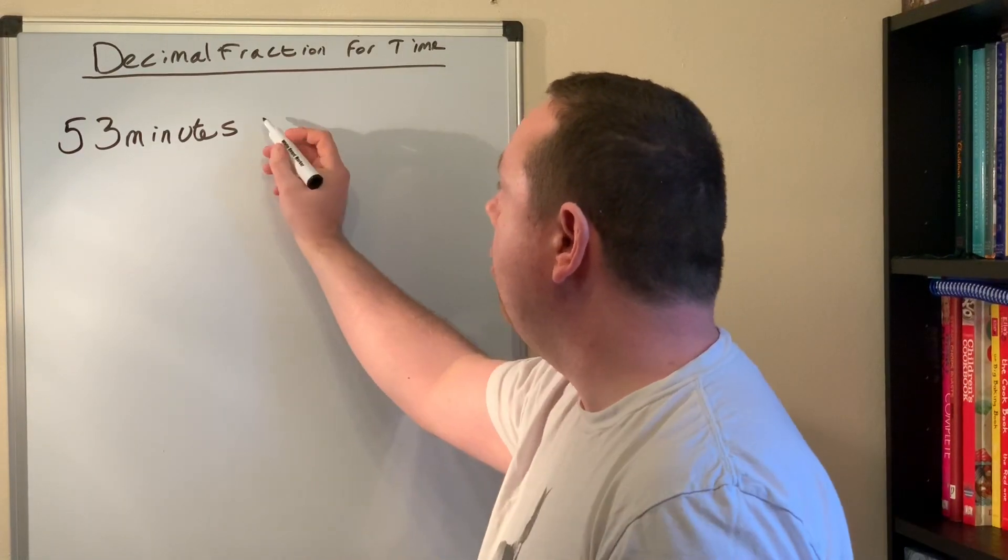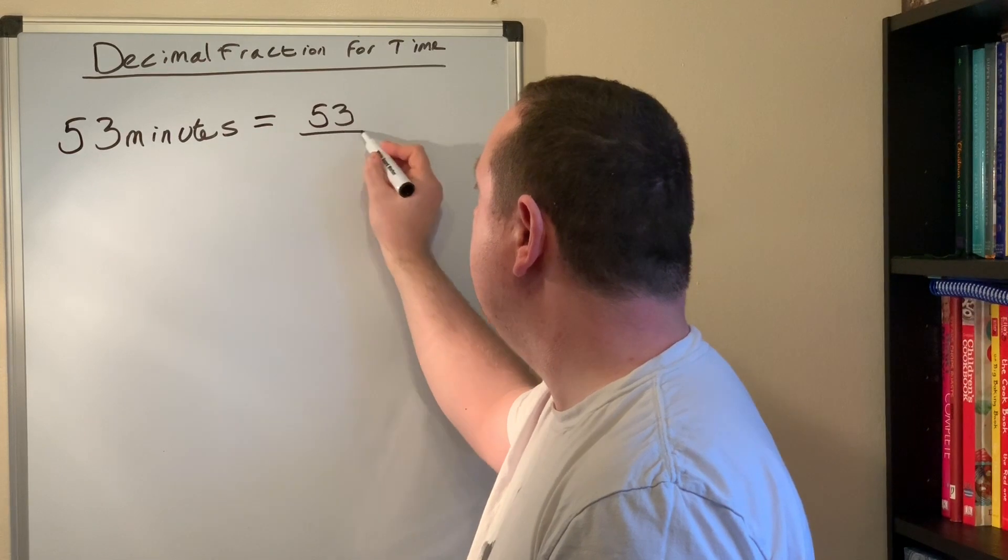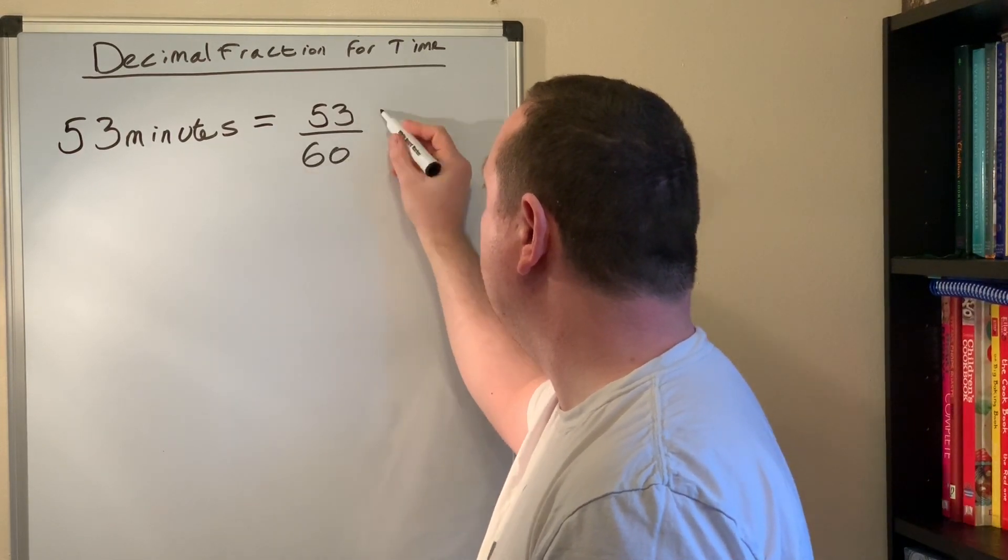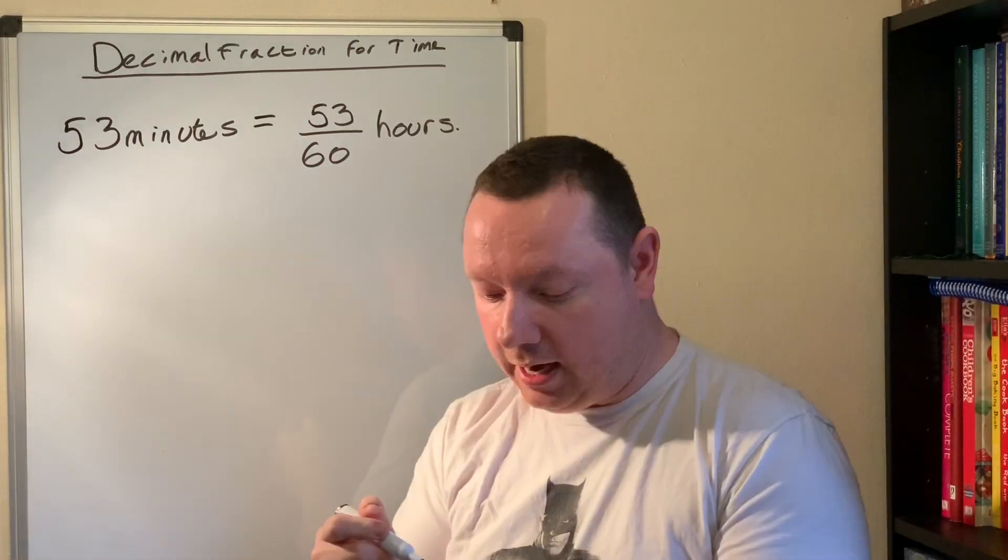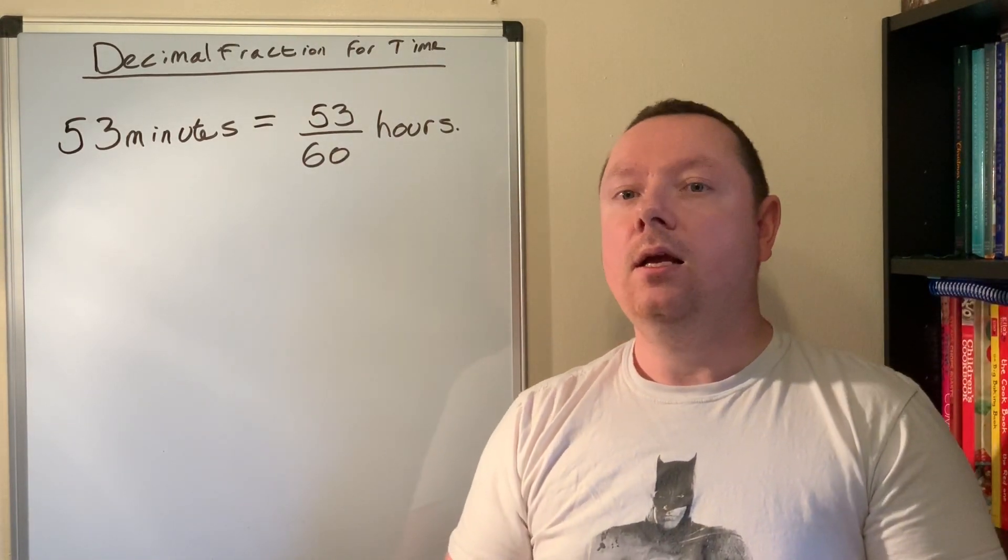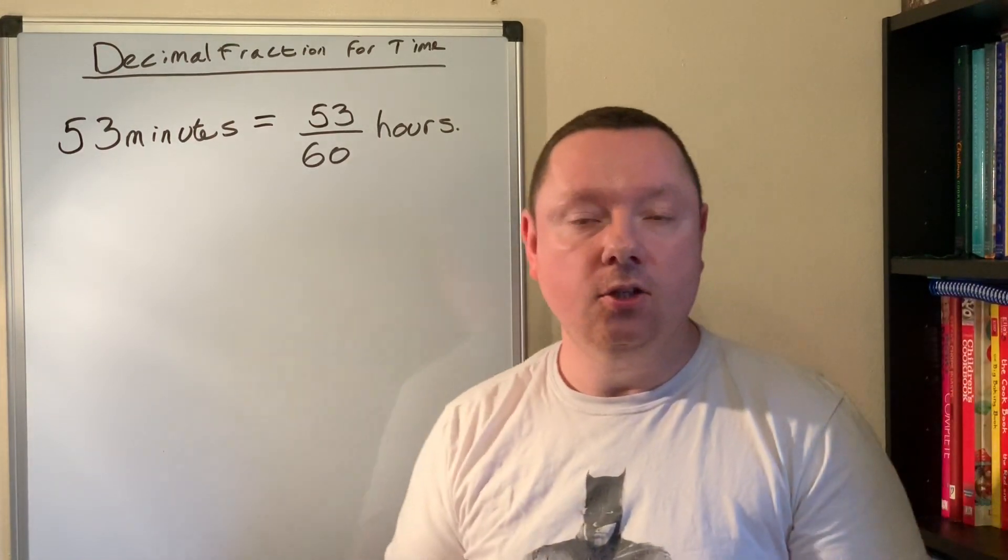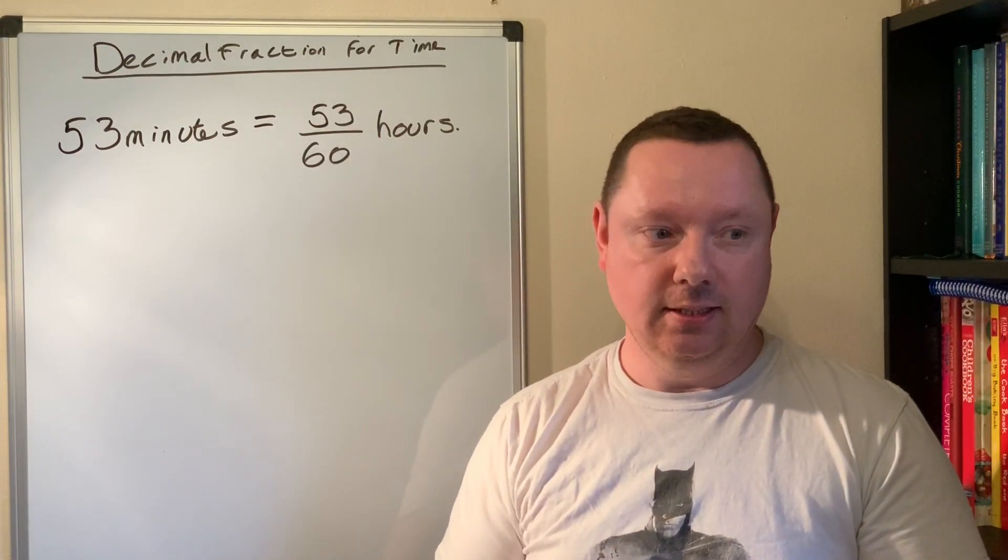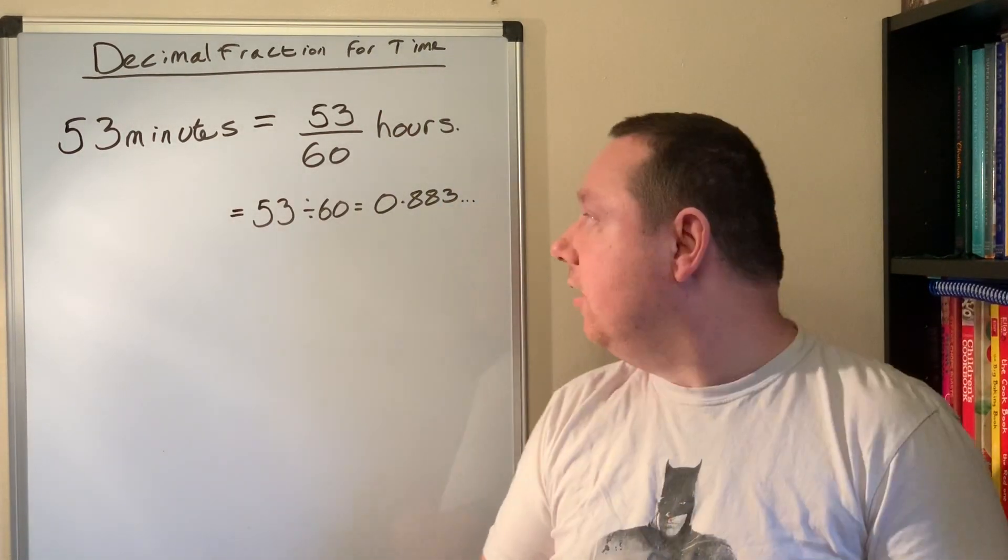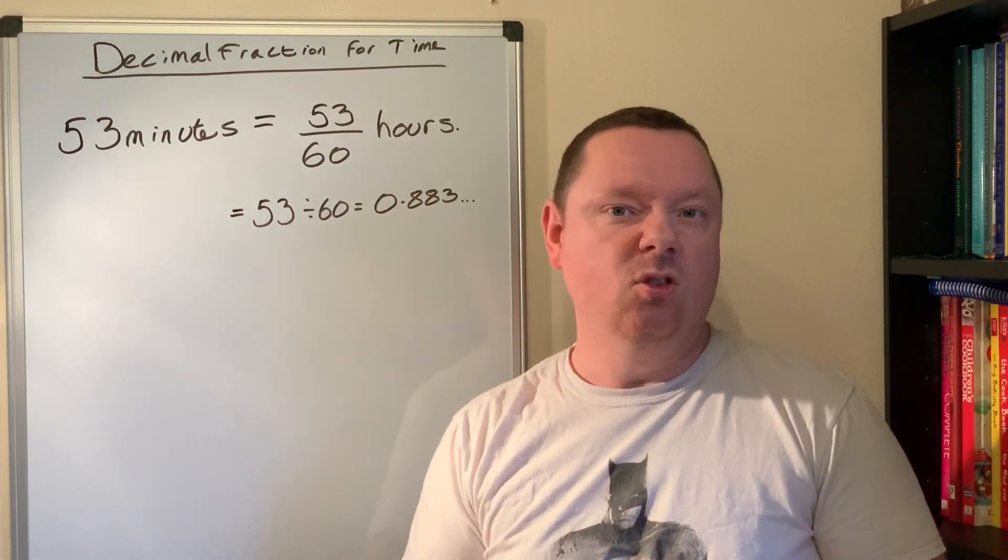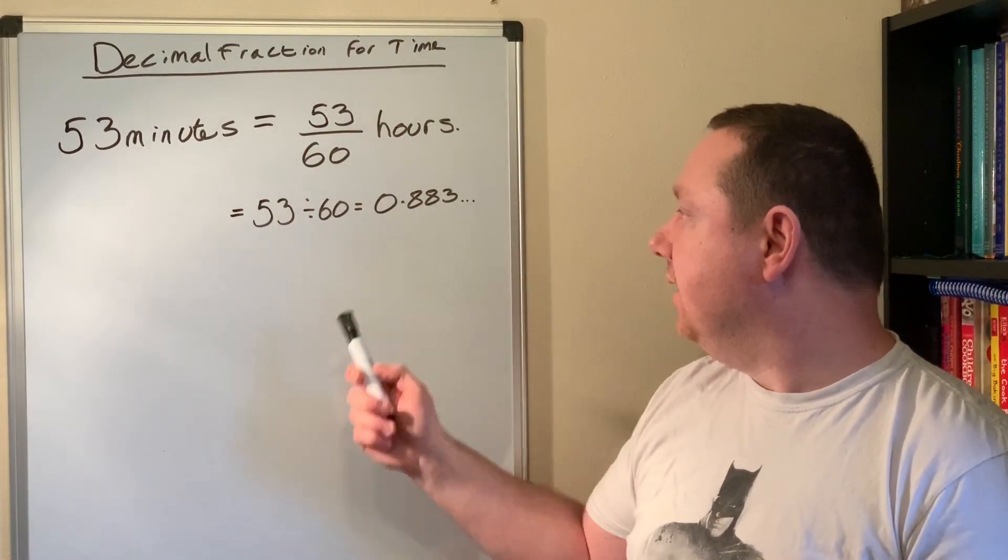So our step is always the same. We do a fraction first: 53 out of 60 hours. Now to change any fraction to a decimal, you divide top by bottom. So I need to do the sum 53 divided by 60. Use a calculator. 53 divided by 60 in the calculator you get 0.883. So 0.88 to two decimal places would be 53 minutes as a decimal.